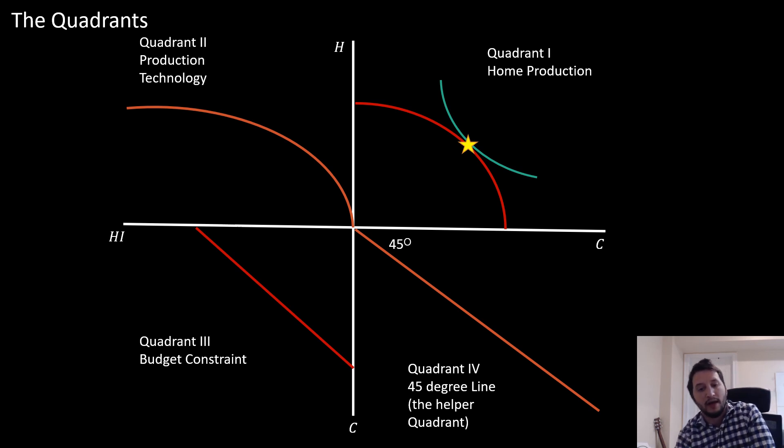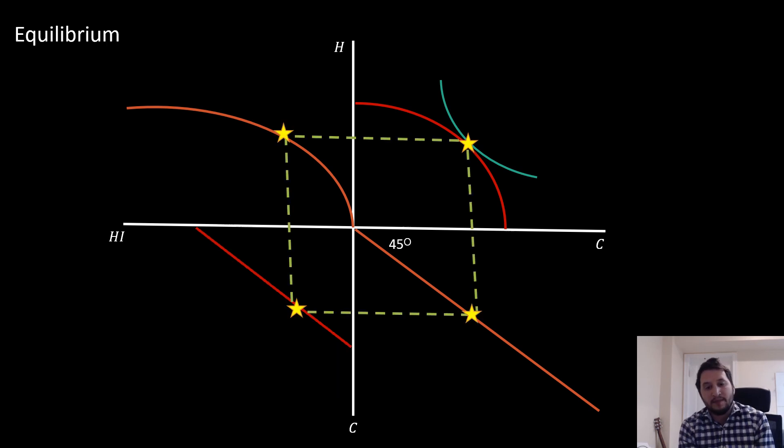Now equilibrium in this model is characterized by really connecting the dots. We have our tangency conditions in our first quadrant, where the PPF is tangent to our individual's indifference curve there, and that corresponds to a level of production which is on the production function in our second curve.